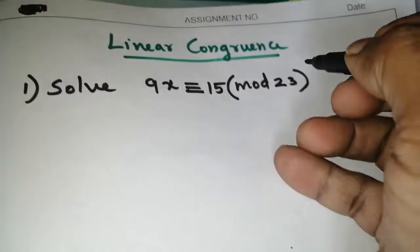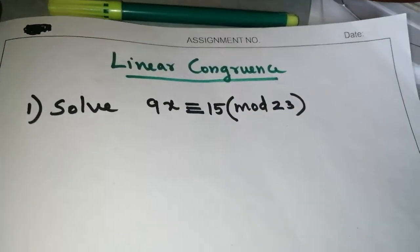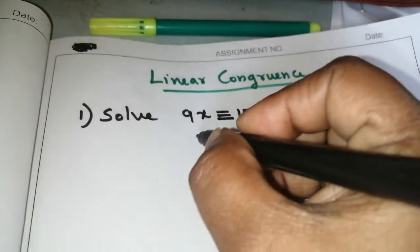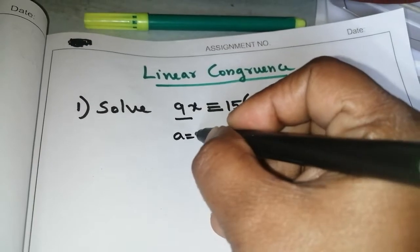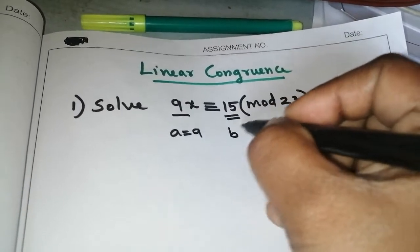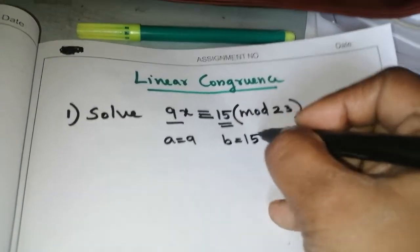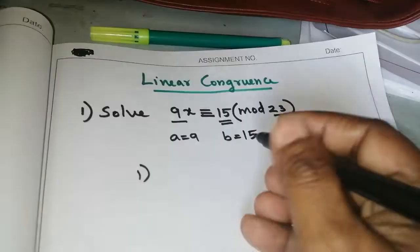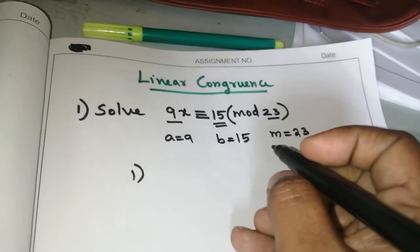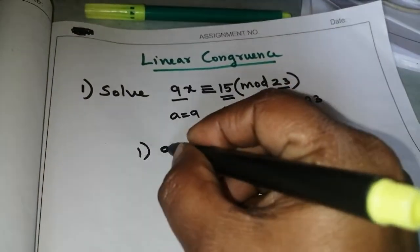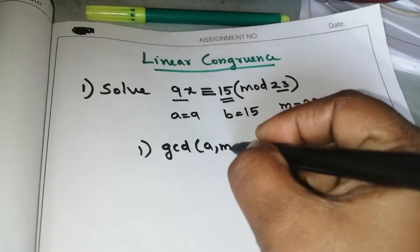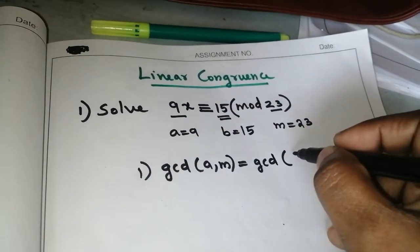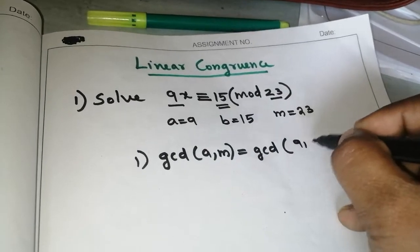Linear congruence solver: 9x congruent to 15 modulo 23. Here in this question, a equals 9, b equals 15, m equals 23. First step: find the GCD of a and m. That is, find out the GCD of 9 and 23.